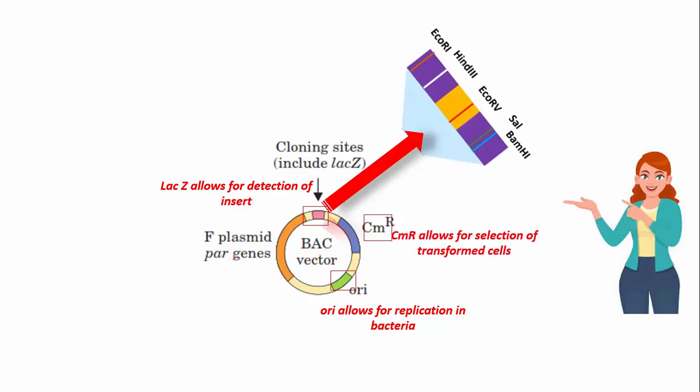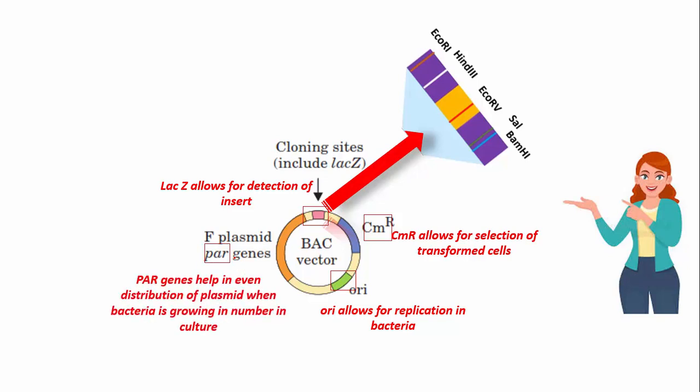The BAC vector also has par genes. Par genes are involved in even distribution of the plasmid when bacteria are growing in number in culture.